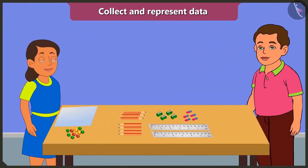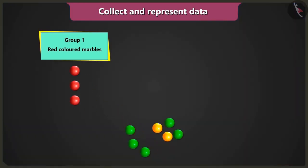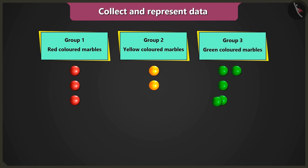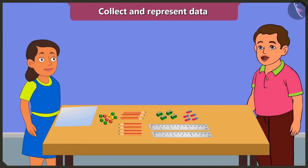Bubbly, first of all you have to make groups of same colored marbles. First group of red colored marbles, second group of yellow colored marbles, and third group of green colored marbles.